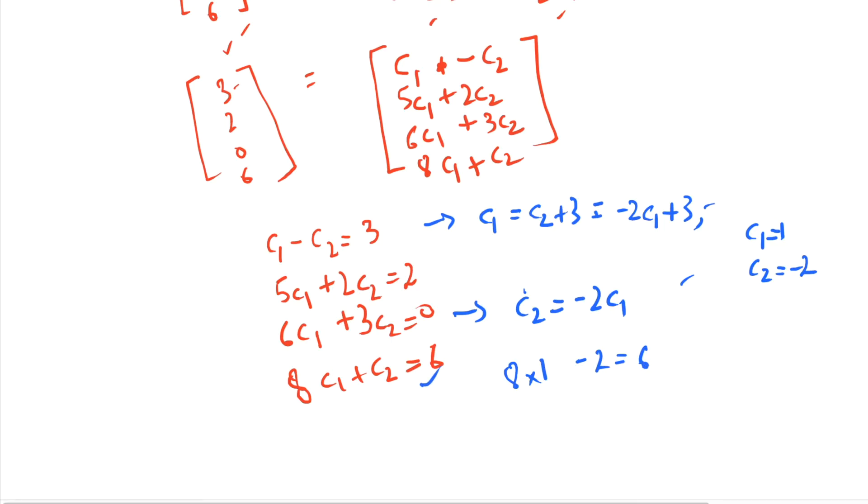and plus c2, so c2 is minus 2, so this will be 6. So this equation is satisfied by this c1 and c2 value. Let's check if equation 2 is also satisfied. So 5 into c1 is 5, and this becomes minus 2 into 2, so this is 1, and this is not equal to 2.